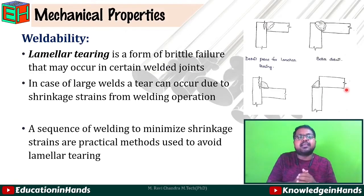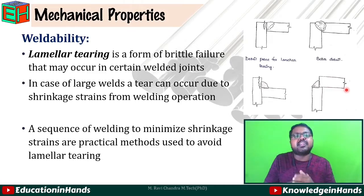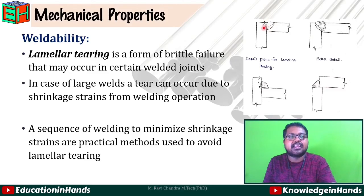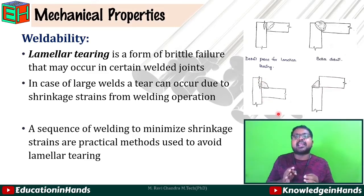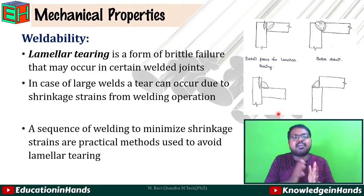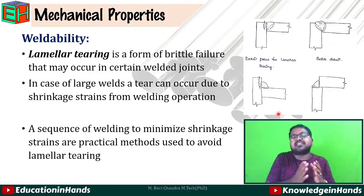Next is weldability — the ability to be welded. One problem encountered here is called lamellar tearing, which is a form of brittle failure that may occur in certain welded joints. If welding is not done properly, a tearing pattern will occur on the steel members at the joint. In the case of large welds, tearing can occur due to shrinkage strain from welding operations because very high heat is involved. To overcome this effect, a specific sequence of welding to minimize shrinkage strains is practiced in practical applications to control lamellar tearing.